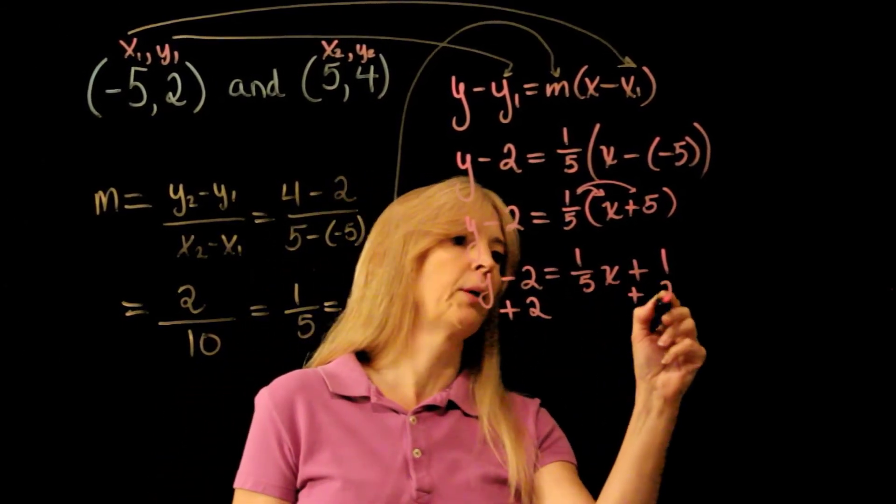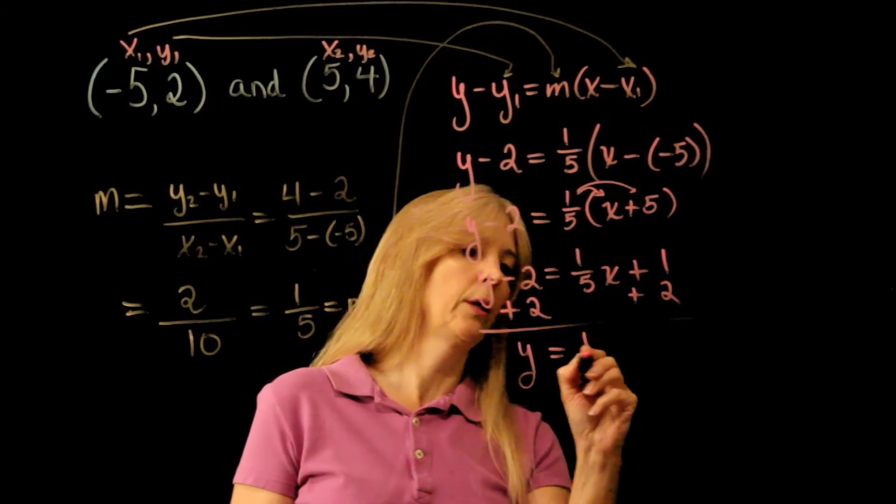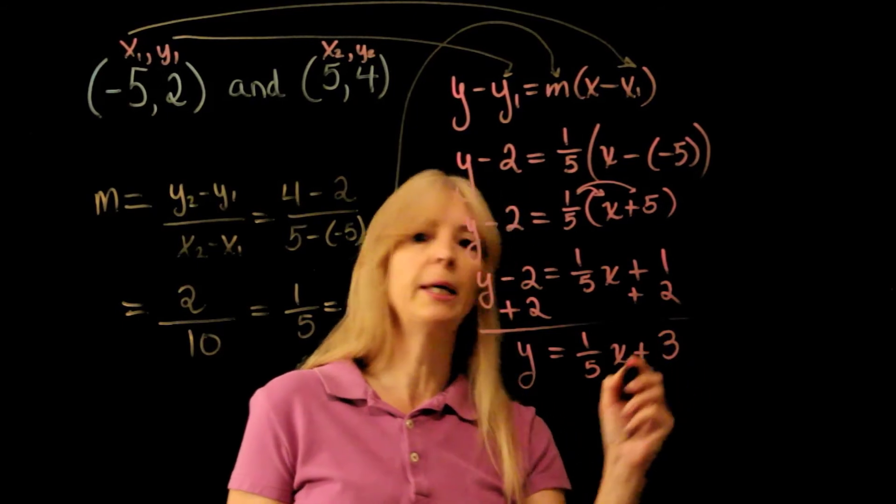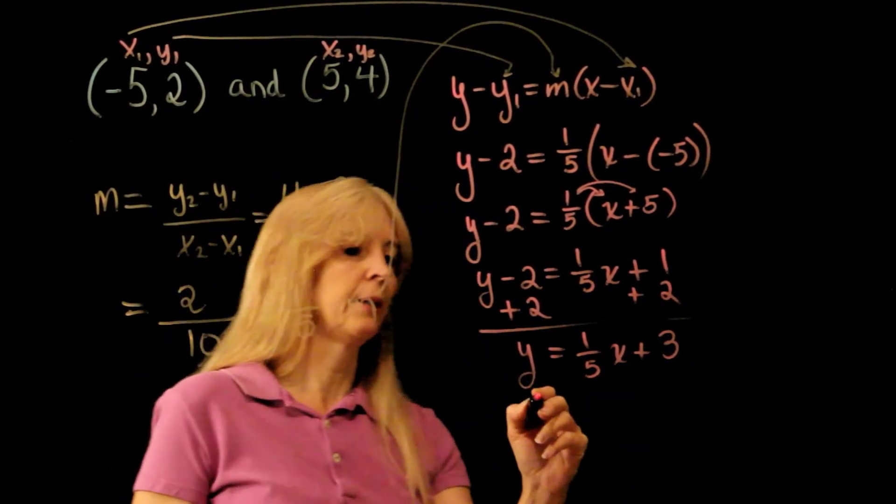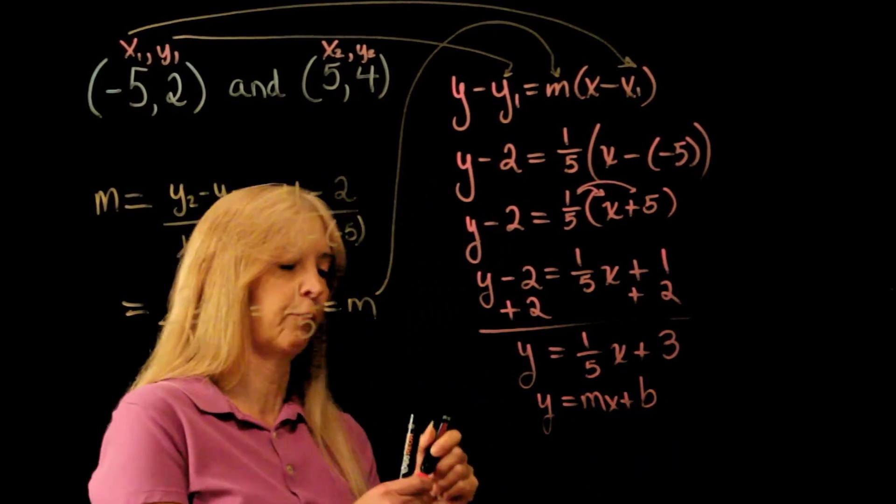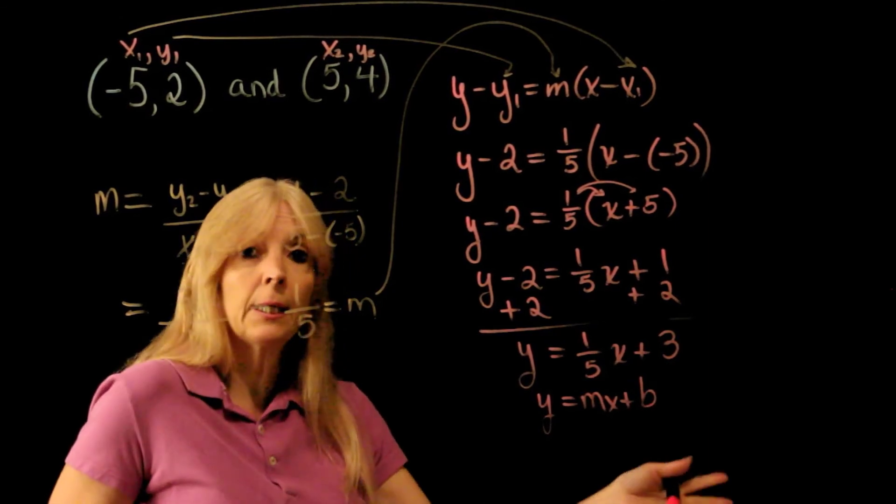Finally, I add 2 to both sides to get y equals 1 fifth x plus 3. That puts it in y equals mx plus b, my slope-intercept form, where this was my point-slope form. And that's it.